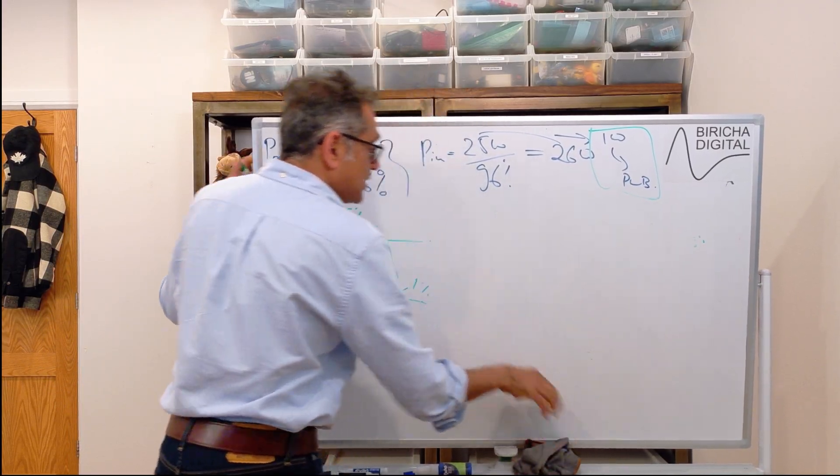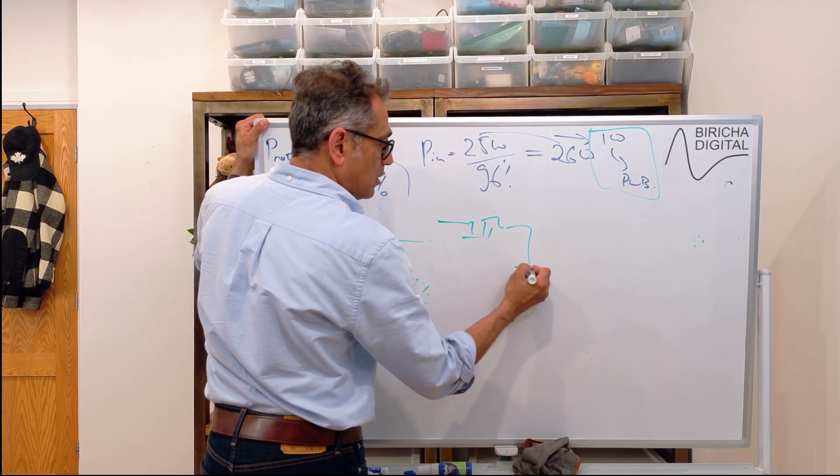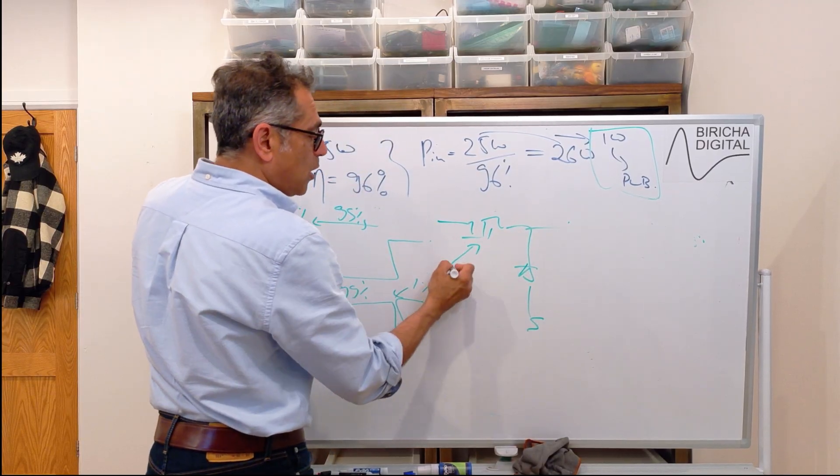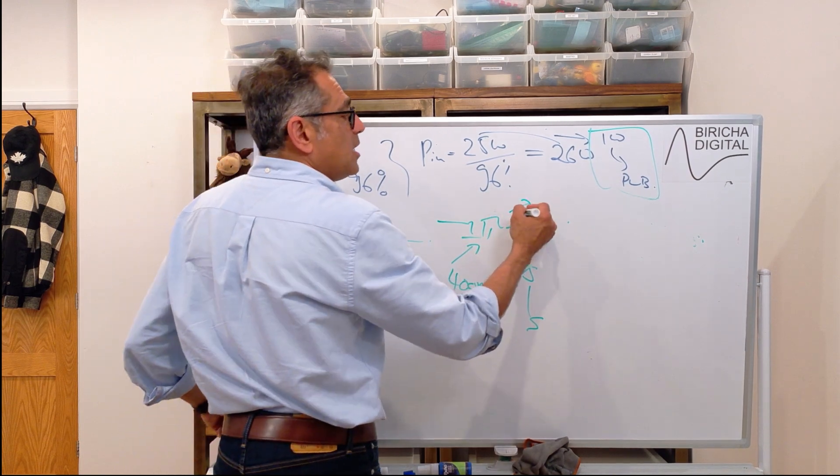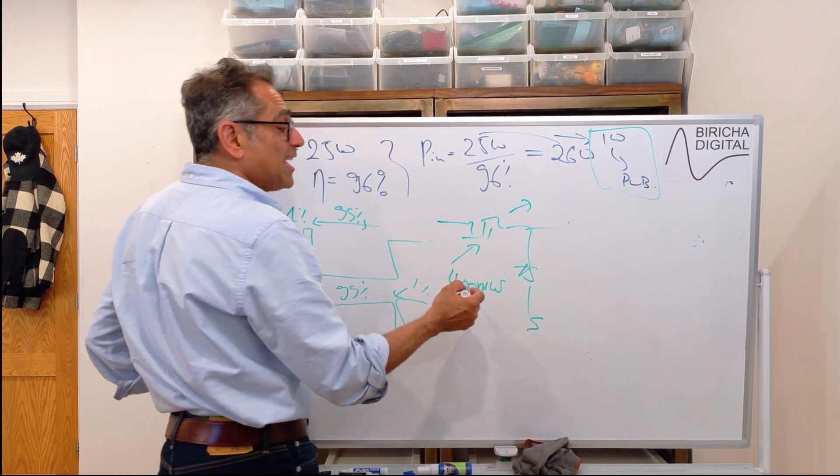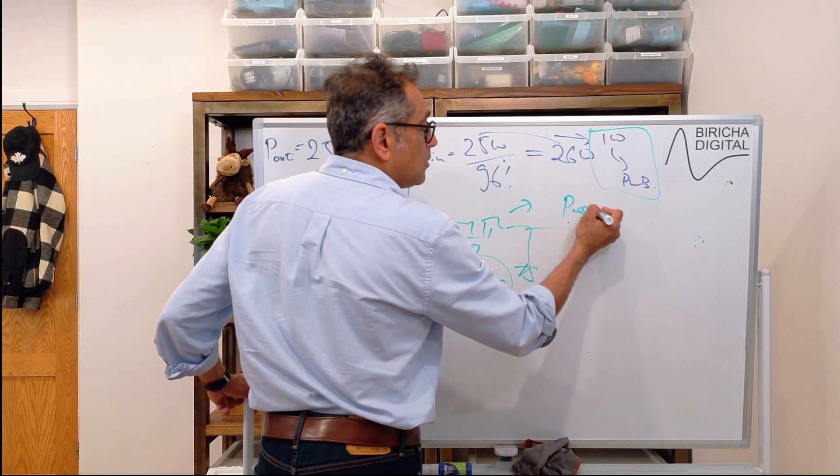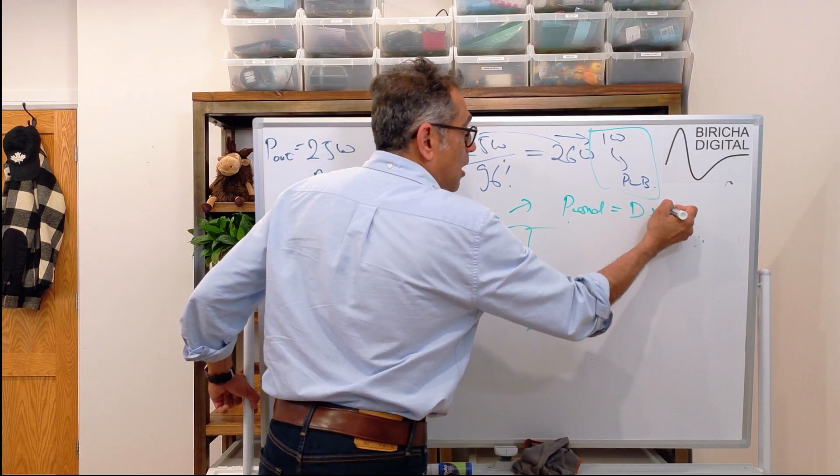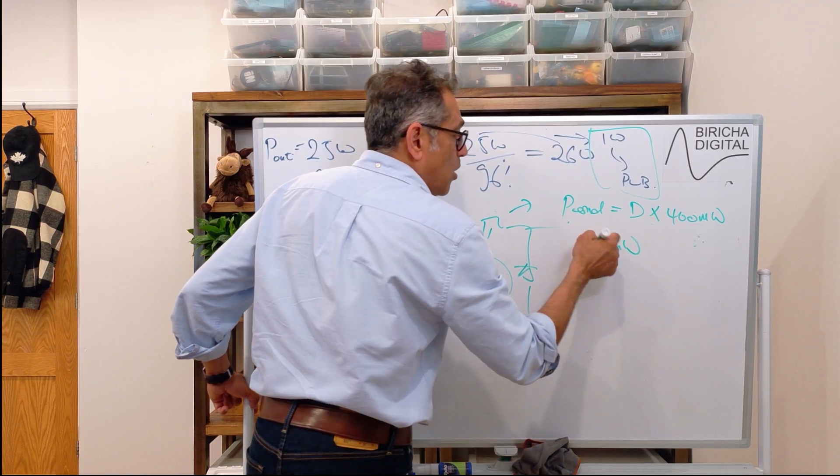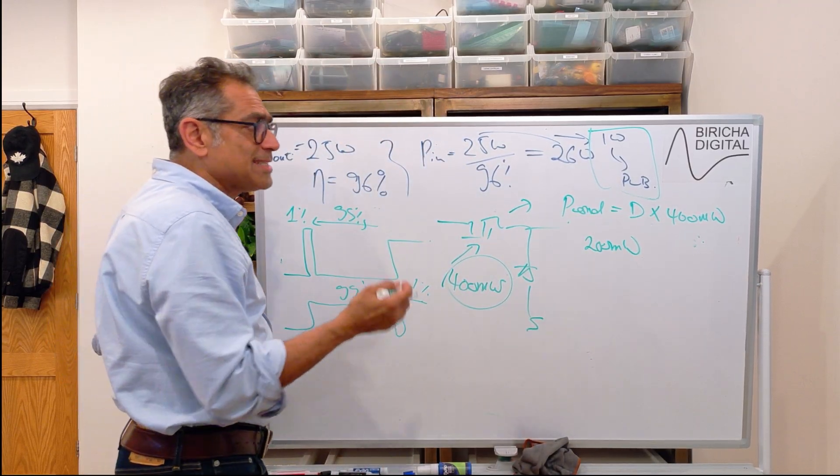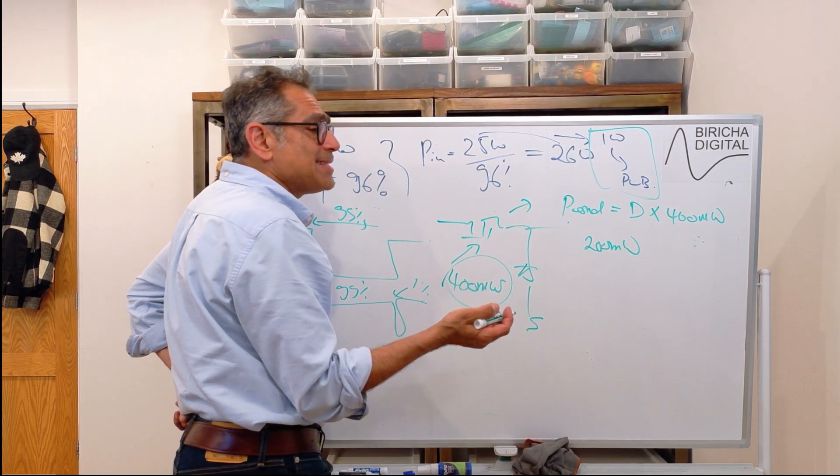So if I make my conduction loss proportional to the duty, we said we're going to allocate 40 percent for the top switch, so 40 percent of one watt is 400 milliwatts. Let's for simplicity say that my duty is 50 percent. Therefore I'm going to allocate 50 percent of this for my conduction loss. So my P con would be my duty times total budget which was 400 milliwatts, so I can do 200 milliwatts worth of conduction losses and the rest is for my switching loss.